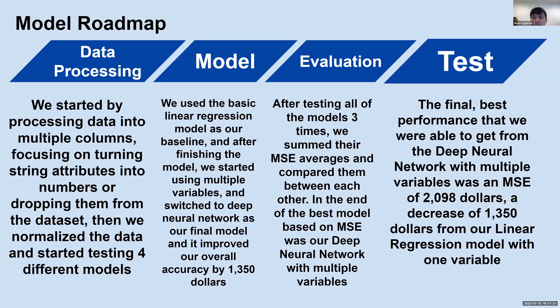So model roadmap, there are four parts. The first part is the data processing. We first got our data and processed it into multiple columns. We noticed there were a lot of string attributes, so we converted them into numbers for easy visualization or graphing the data later on, or we entirely dropped them. Then we normalized the data and started testing for different kinds of models.